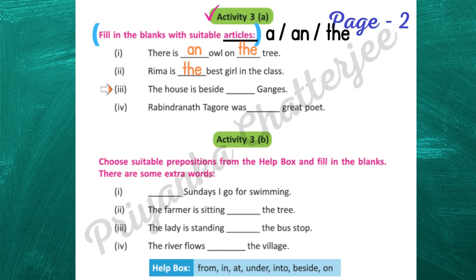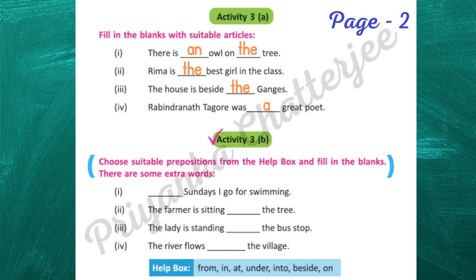Number three: the house is beside the Ganges. Rabindranath Tagore was a great poet. Next, activity 3b: choose suitable prepositions from the help box and fill in the blanks — there are some extra words. On Sundays, on Mondays, on this date, on 22nd May. The farmer is sitting under the tree — not below the tree. Number three: the daddy is standing at the bus stop.